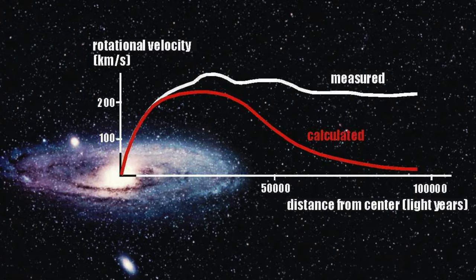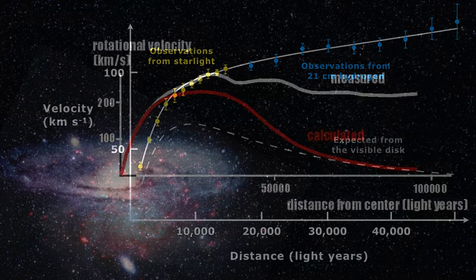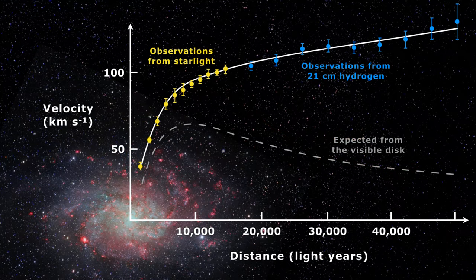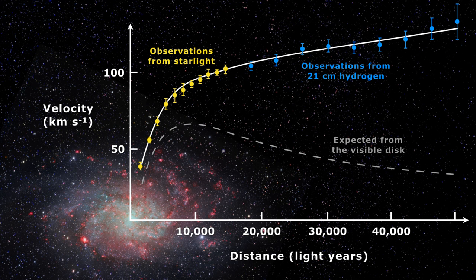One of the most compelling pieces of evidence for dark matter comes from the study of galactic rotation curves. While we expect the rotational speed of stars to decrease with distance from the galactic center, the observed data show that stars and galaxies maintain a relatively constant speed.